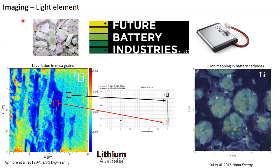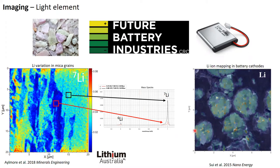A really nice advantage of SIMS is light element analysis. For EDS and other X-ray based techniques, light elements are extremely difficult to analyze, whereas alkalis are extremely sensitive and easy for SIMS. We can produce very nice maps of lithium with absolute ease — for example, looking at micron-scale variation of lithium concentration in mica, or examining charge and discharge states of lithium batteries to actually see the lithium moving around. At Curtin University, a number of projects with the Future Batteries Industry CRC are going to be looking at exactly that.